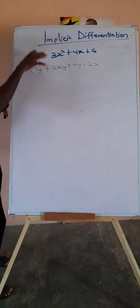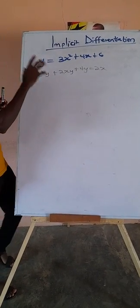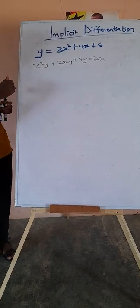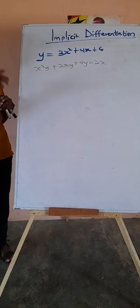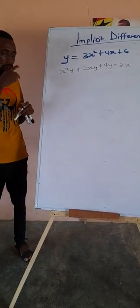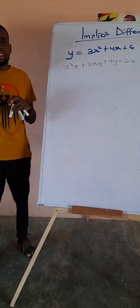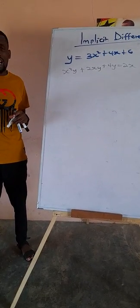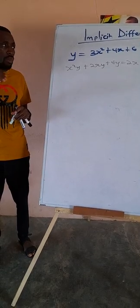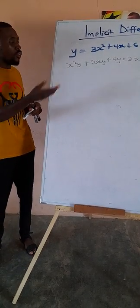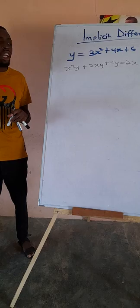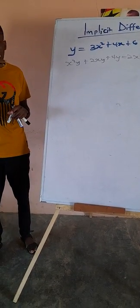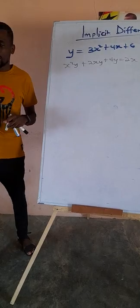We need some tools to be able to know how to differentiate implicit functions correctly. I will take you through that. Then we will learn how to differentiate implicit functions with two examples. After that, we will look at the application of implicit differentiation — that is, to prove an expression. Watch the video till the end.